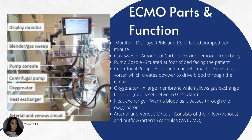The machine also contains arterial and venous circuits, consisting of inflow and outflow cannulas. The inflow cannula is the venous cannula and the outflow is the arterial cannula. In VA ECMO, they have both arterial and venous cannulas. With VV ECMO, they only have venous cannulas — a venous inflow and a venous outflow.